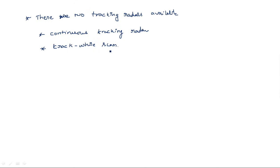Acquisition is getting the information about the presence of the target. Once the target is acquired, the system switches to tracking mode. In continuous tracking radar, one antenna identifies the target first, then switches to tracking mode, and continuously tracks the target as long as it is in the vicinity. In track-while-scan, once the target is identified it switches to tracking, but a separate radar antenna is used for tracking — meaning two different antennas are used.